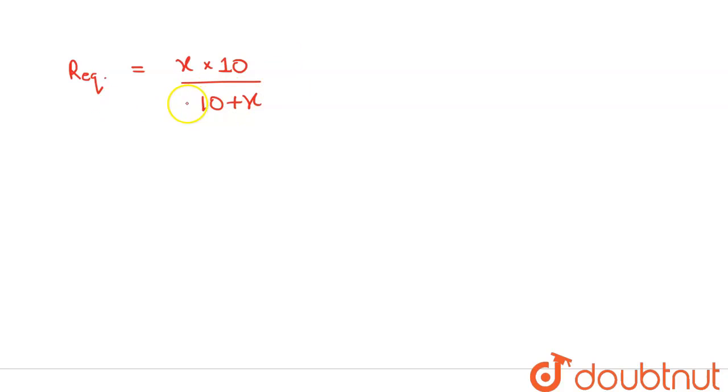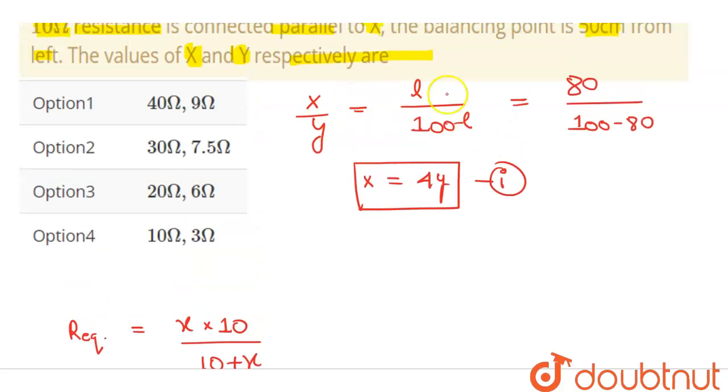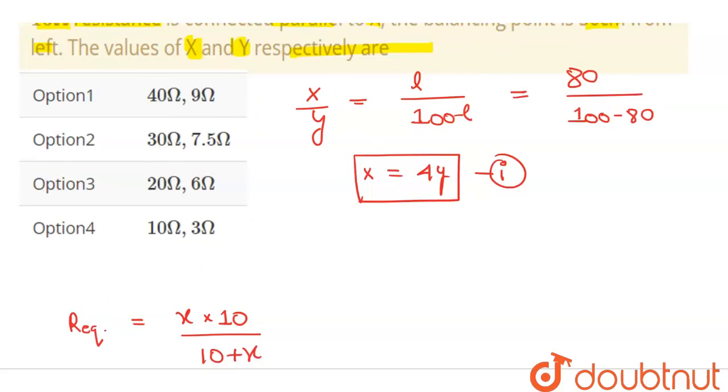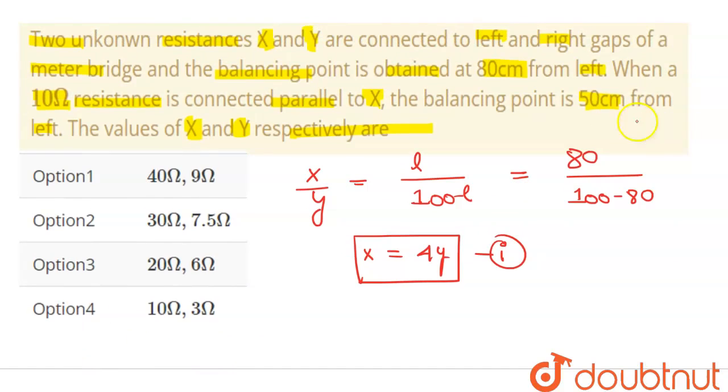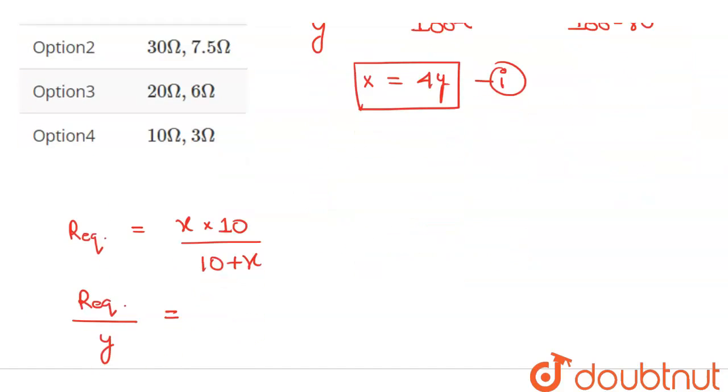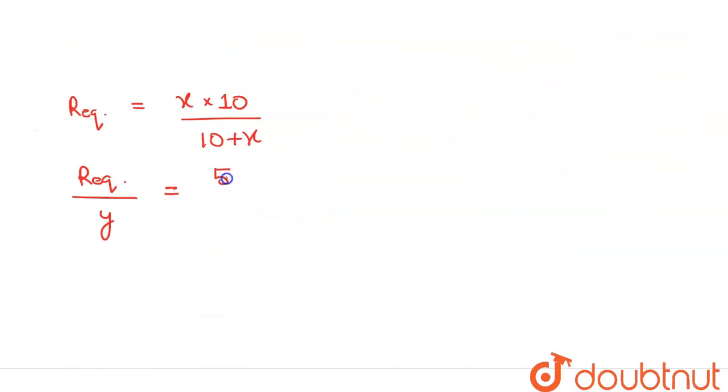Since now we know the r equivalent, we will use this in the formula. That will be very specifically r equivalent over y. This is equals to balancing point that is given to us 50 centimeter. 50 over 100 minus 50.